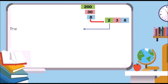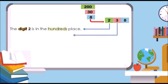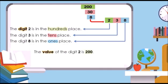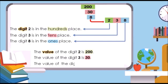The digit 2 is in the hundreds place. The digit 3 is in the tens place. The digit 8 is in the ones place. The value of the digit 2 is 200. The value of the digit 3 is 30. The value of the digit 8 is 8.